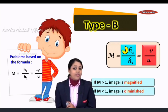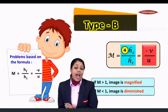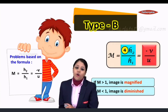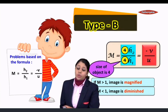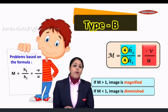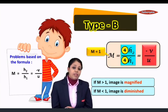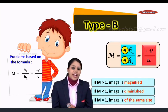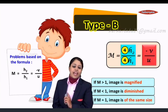Next, if the height of the image is 4 and height of the object is also 4, then if you take the ratio, it will be 1. So students remember, whenever you have magnification M equal to 1, then we say that the image is of the same size.